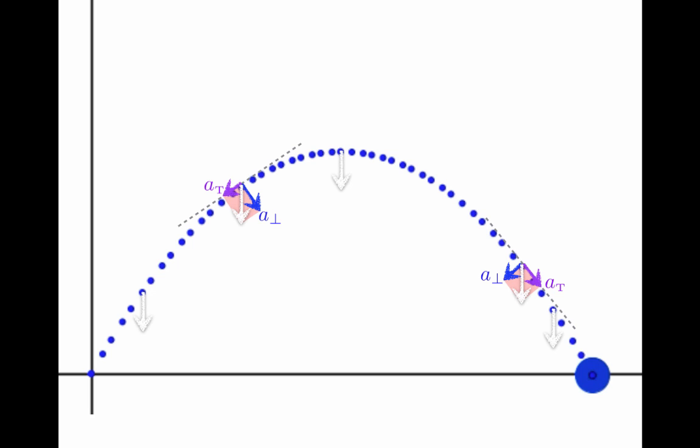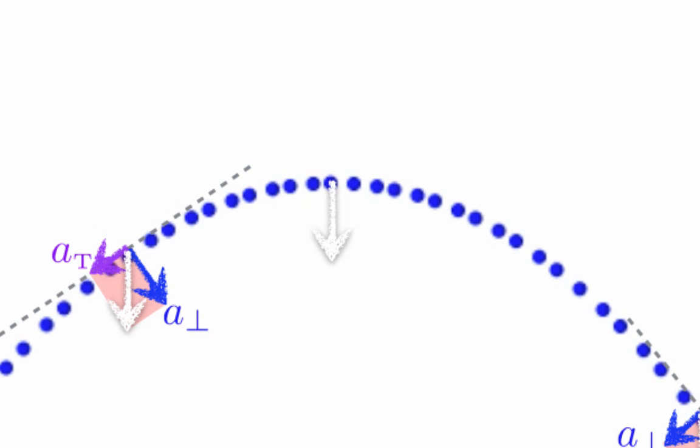There's one place along the path where the speed is not changing at all. Can you figure out where that point is? At the top of the path, the acceleration vector is totally perpendicular to the motion, so the speed is not changing at all there, only the direction.